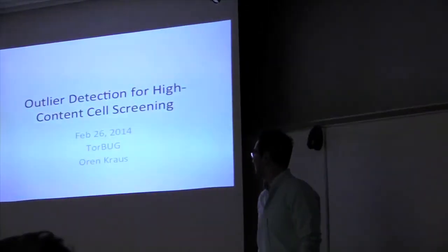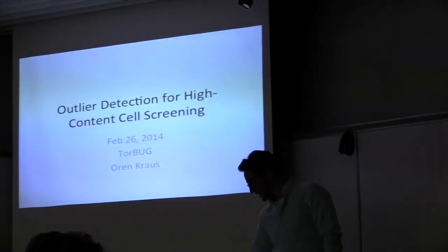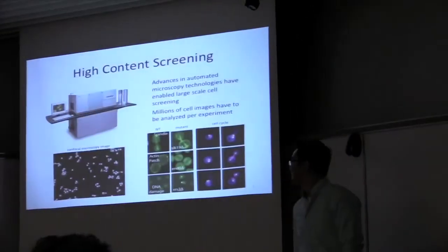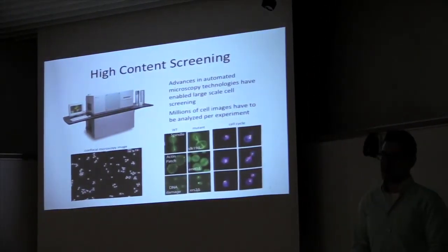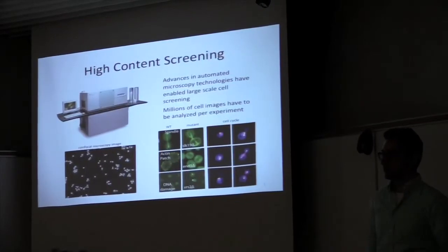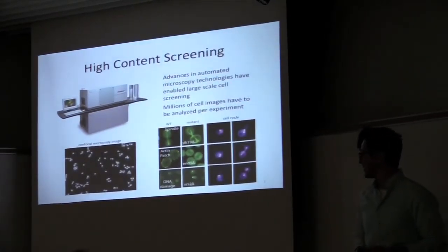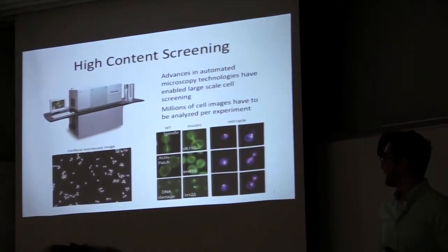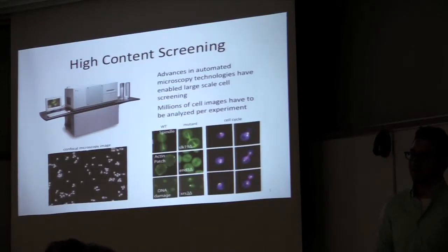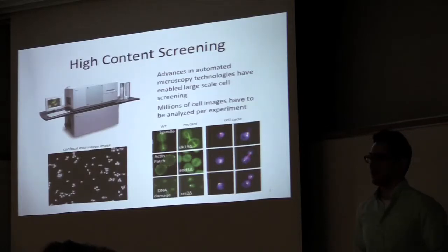Good afternoon everyone. Today I'll present techniques for analyzing high-content screenings of cells. High-content screening has allowed subcellular morphology to be used in large-scale genetic screening. In our implementation, our experiments generate on the order of 5 million cells per screen, which is obviously too many images to be categorized or studied by eye, so we need to develop computational tools to analyze these images.